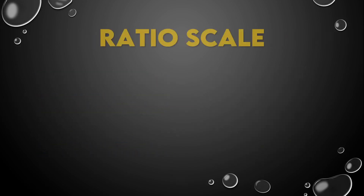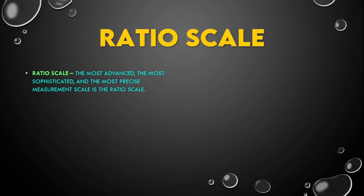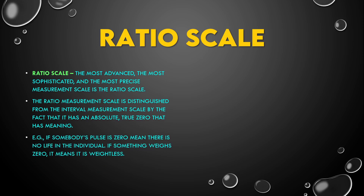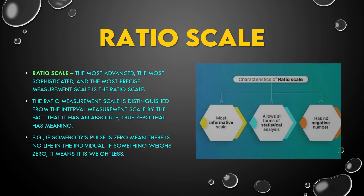The most advanced, most sophisticated, and most precise measurement scale is the ratio scale. The ratio measurement scale is distinguished from the interval measurement scale by the fact that it has an absolute, true zero that has meaning. Example: if somebody's pulse is zero it means there is no life in the individual; if something weighs zero, it means it is weightless.